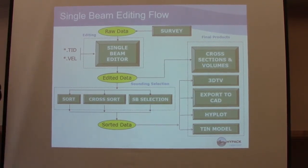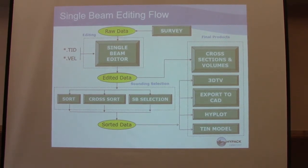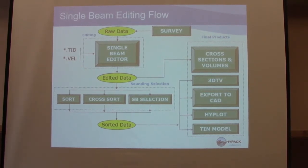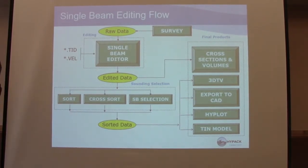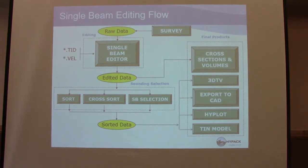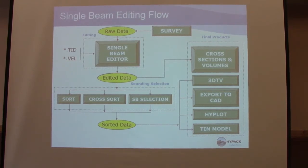Sort is not regular — cross-sort is regular but doesn't care about shallow soundings. The other way to get gridded soundings is a TIN model, which gives a perfectly gridded result — say 5-foot by 5-foot grids — but also doesn't prioritize the shallowest sounding. Sounding selection is a program that allows you to pick which soundings to use in a profile, giving you more control of which soundings you're going to take.